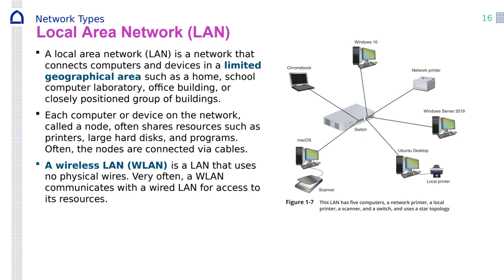Another example of LAN is called wireless LAN — it uses no physical wire. But the wireless LAN communicates with a wired LAN for access to resources. Devices here are connected to the access point, and the access point itself is connected by cable — but from the devices to the access point it's wireless.